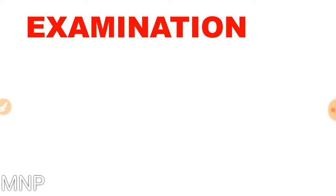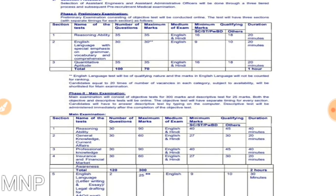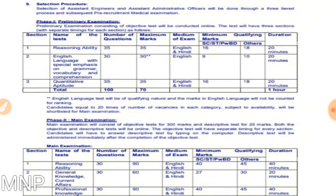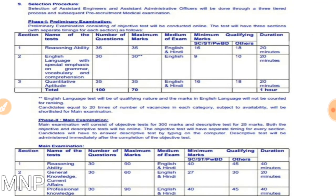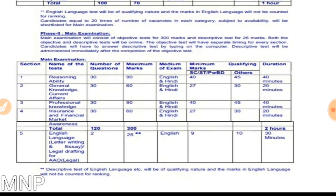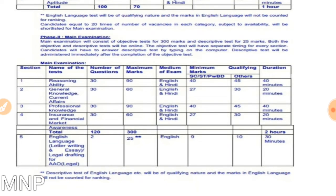Now for the selection procedure, there will be three phases. Phase one is the preliminary examination with three sections: reasoning ability (35 questions), English language (30 questions), and quantitative aptitude (35 questions). The duration is one hour. The English language paper is of qualifying nature only and its marks will not be counted for ranking, so the maximum marks for the pre-exam will be 70. Phase two is the mains examination with five sections: reasoning ability (30 questions), general knowledge and current affairs (30 questions), professional knowledge (30 questions), and insurance and financial market awareness (30 questions), with a total of 300 marks and a duration of two hours.